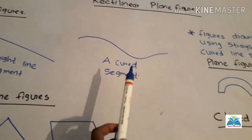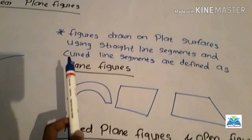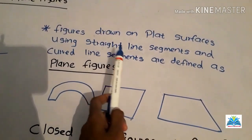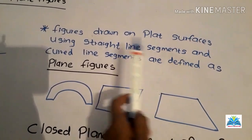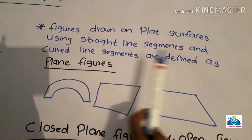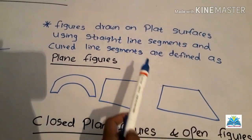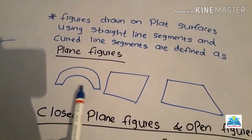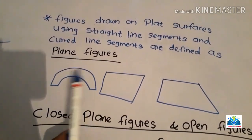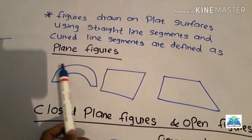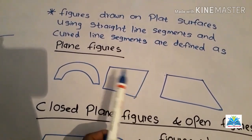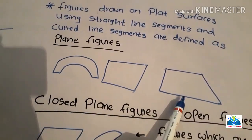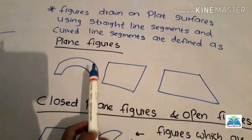Plane figures are figures drawn on flat surfaces using straight line segments and curved line segments. If we draw on any flat surface using straight line segments, curved line segments, or both together, we can define these as plane figures. You can see some examples of plane figures.